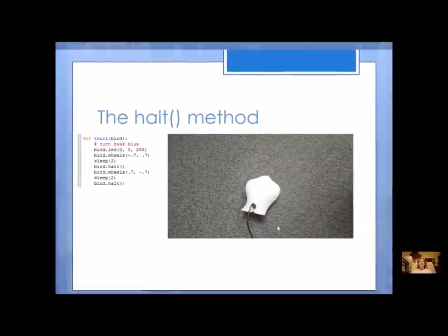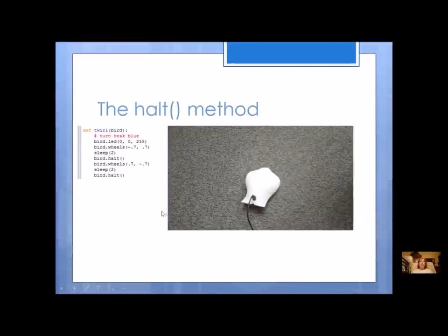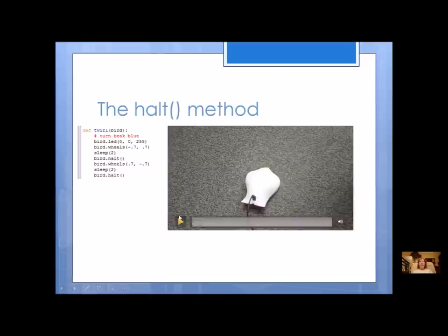But pay attention to what the HALT method does. So here I've got, I'm going to do a twirl, I'm going to turn the beak color blue, I'm going to twirl, I'm going to HALT, I'm going to twirl again. So let's just watch this little video of this particular code.